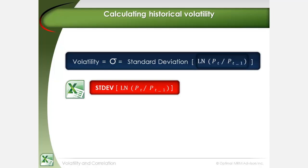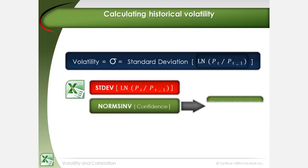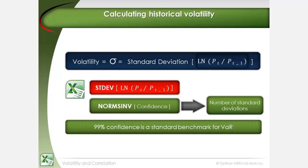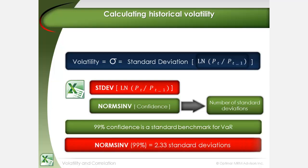Excel provides a simple function, NORMINV, for the calculation of the equivalent number of standard deviations without fat-tailed assumptions. For the purposes of computing 99% VaR under log-normal distribution assumptions, NORMINV of 99% is equivalent to 2.33 standard deviations.